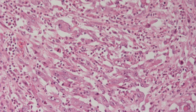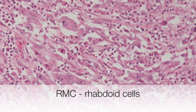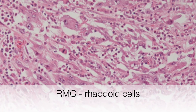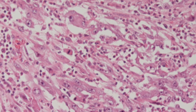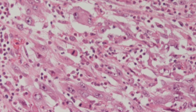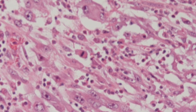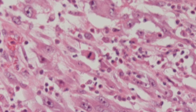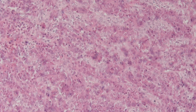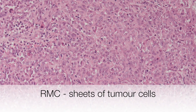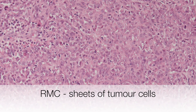Here you can see that the tumour cells have a rather rhabdoid and focally squamoid appearance. As we zoom into the cells you can see abundant pink staining cytoplasm, pleomorphic nuclei with prominent nucleoli and mitotic figures. This area shows solid sheets of tumour cells.